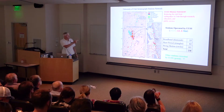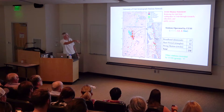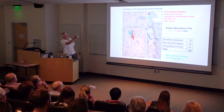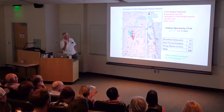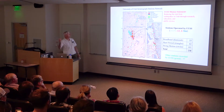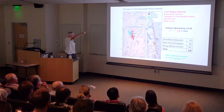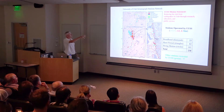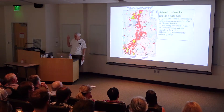This is the seismic network on the left. There's a key and some numbers over on the right. The upper right is the UUSS mission statement: reducing the risk from earthquakes in Utah for research, education, and public service. We're funded to monitor the two regions shown by the dotted black boxes on the left — the Yellowstone region and the Utah region.